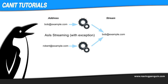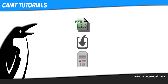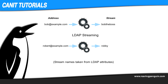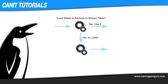If you have a large number of aliases and it would be inconvenient to enter them all through the web interface at once, you can send our team a file to import. With LDAP streaming, Hosted Canet makes a query to your back-end LDAP or Active Directory server, and Canet can then determine aliases automatically. For unusual situations such as distribution lists, you can still hand-enter specific exceptions under Setup > Address-to-Stream Mappings.